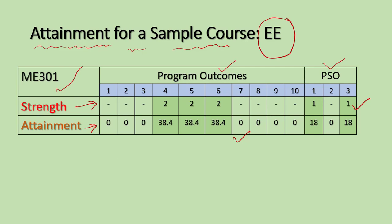If there are, say, 40 courses, we will get 40 such tables. For all of them, we have to find the attainment levels based on the mapping strength and CO attainment. Finally, we get one consolidated table where the attainments are tabulated and the average is computed.